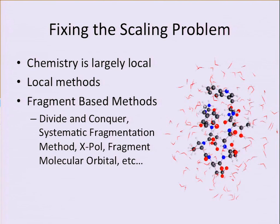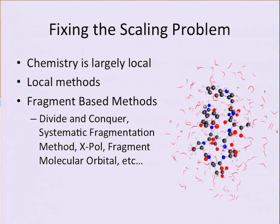In fragment-based methods, we take a large biomolecule and divide it into small chunks. Instead of doing a calculation on the whole thing, we do lots of small calculations on individual chunks, avoiding the high nonlinear scaling. Another nice thing about fragment-based methods for HPC is they're easy to parallelize — we just farm the individual fragments out to our nodes. It's not quite embarrassingly parallel, but quite easy.